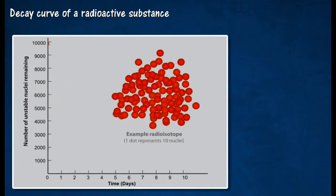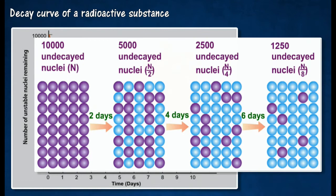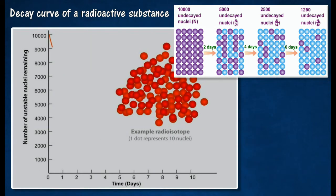The graph of the activity of a radioactive nuclide against time is known as a decay curve. The decay curve shows that it takes two days for the activity of the radioactive sample to be reduced from 10,000 counts per second to 5,000 counts per second. This indicates that the half-life of the radioactive sample is two days.